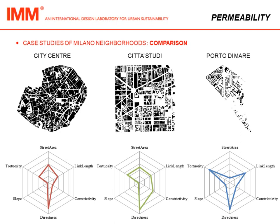The directness value is fairly high in all samples, and in Porto di Mare it is the highest because of the presence of a strong diagonal that crosses the square in the upper part of the neighborhood. The slope is almost null in all contexts because the city of Milano is quite flat, while in Porto di Mare it is slightly higher due to overpasses of the railway and highway.